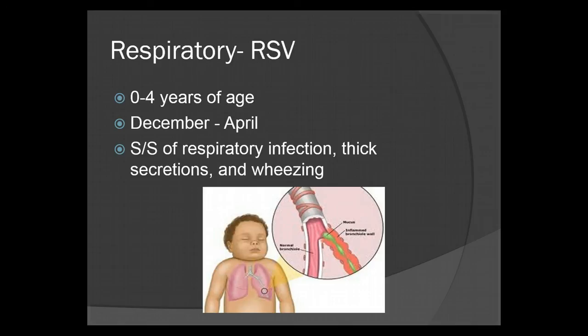RSV, or respiratory syncytial virus, affects patients aged zero to four years and usually occurs between December and April, though it is seen as early as September and October and tends to die off around March. The signs and symptoms include thick secretions and excessive wheezing.